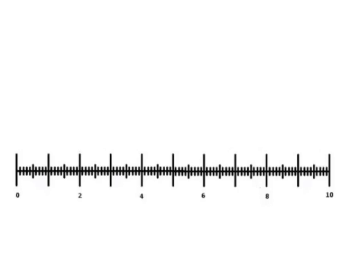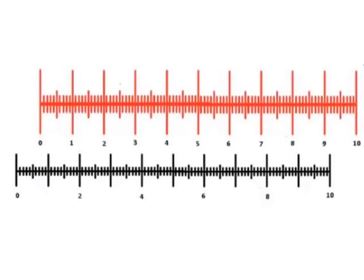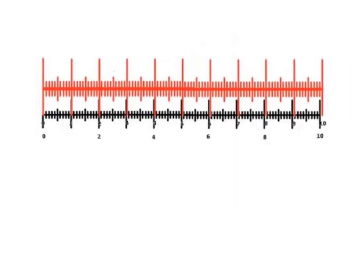We need to work out what each division on our eyepiece graticule is worth in millimetres or micrometres. The red scale here is our stage micrometer, and we know this distance is 0.1 millimetres. I want to know what this distance is in millimetres on my eyepiece graticule. The first thing you do is line them up so that the left-hand division on both scales is next to each other, and then you find any other two divisions which are perfectly lined up — going further along to be a bit more accurate.